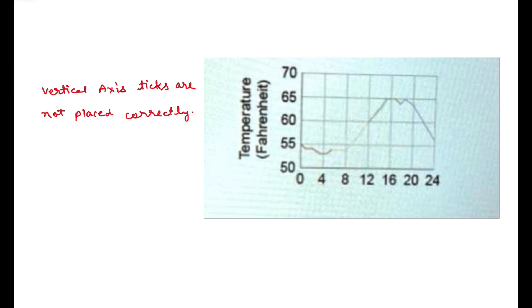Now we will find the reason why this is correct. Tick 50 is not placed correctly. There should be a kink in between 0 and 50 but there is not. So option D will be correct.